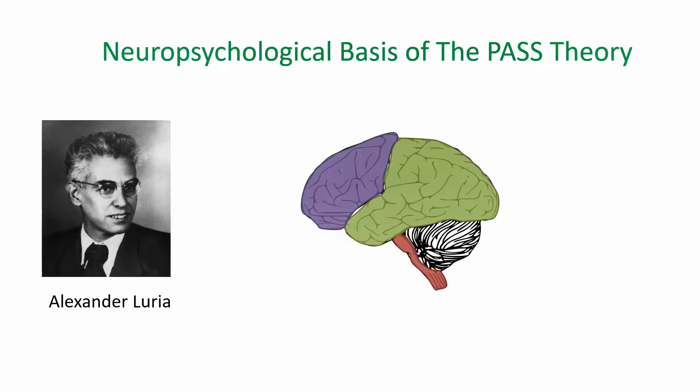The first functional unit includes the brain stem and structures like the reticular activating system, which controls attention and arousal. This unit supports the attention component of the PASS theory.